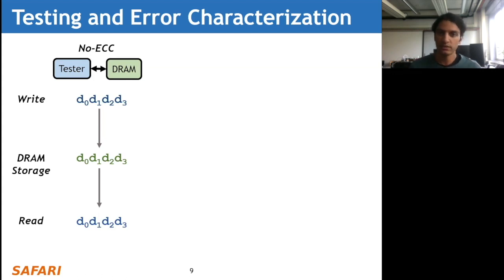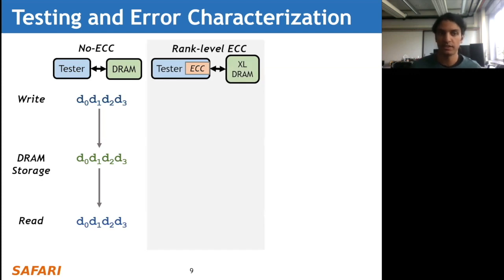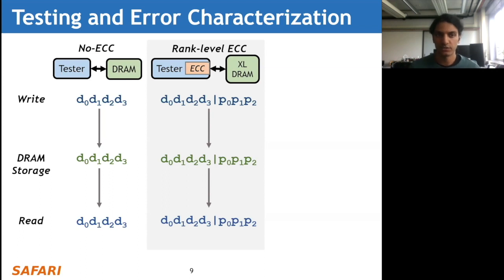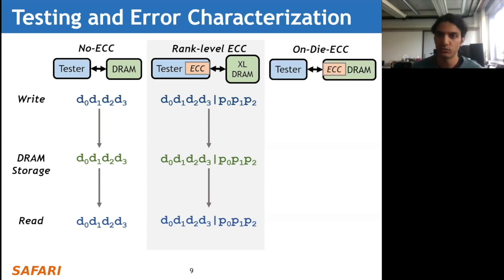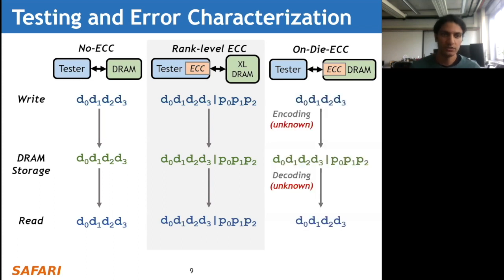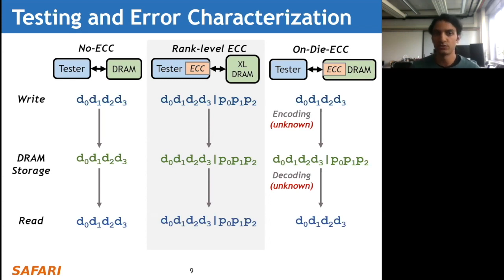The second type uses rank-level ECC where the ECC logic is contained within the tester. Here the tester writes the expanded representation of the data to the DRAM chip, but the same data written is the same data stored and read out. With on-die ECC, the situation is different: the tester writes a 4-bit data pattern, but upon entering the DRAM chip it goes through an unknown ECC encoding function, generating the expanded representation stored within the DRAM. When the tester performs a read operation, the data goes through the unknown ECC decoder, and the 4-bit data is returned to the tester.